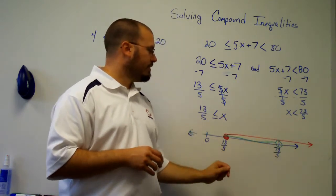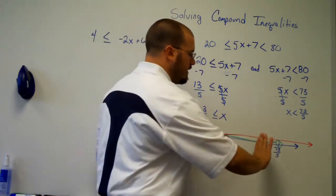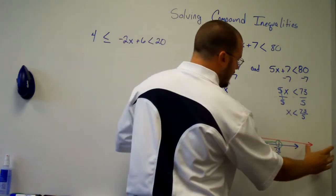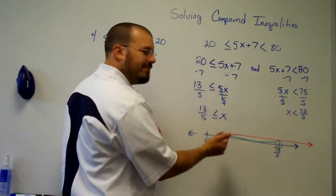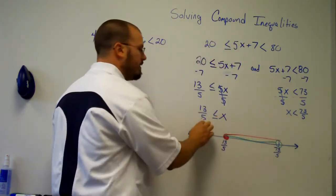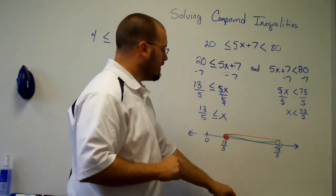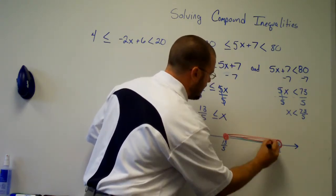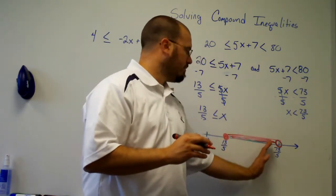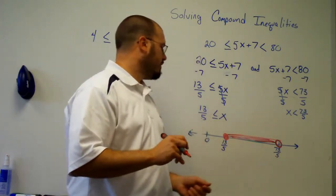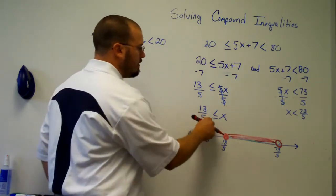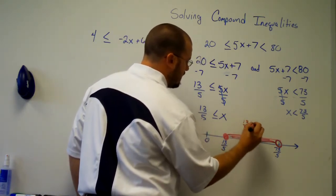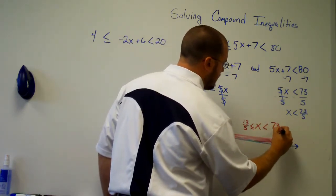This space between 13 fifths and 73 fifths contains the solutions. Over here, something to the far right of 73 fifths, like 100 fifths, would be on the red graph — greater than 13 fifths — but it would not be on the green graph, so it's not a solution to both inequalities and therefore not a solution to the original problem. Our overall solution graph is the values greater than or equal to 13 fifths and less than 73 fifths. We can write that as the compound inequality: 13 fifths ≤ x < 73 fifths.